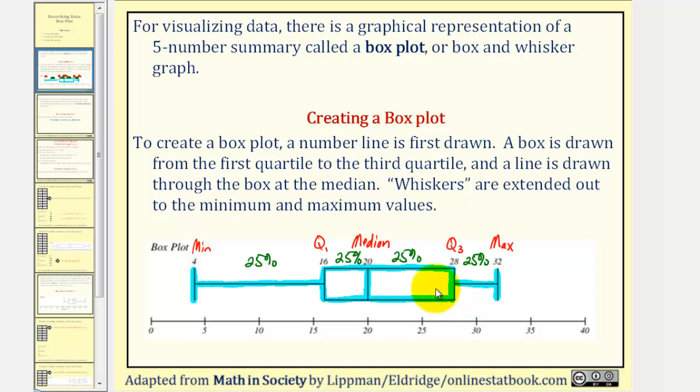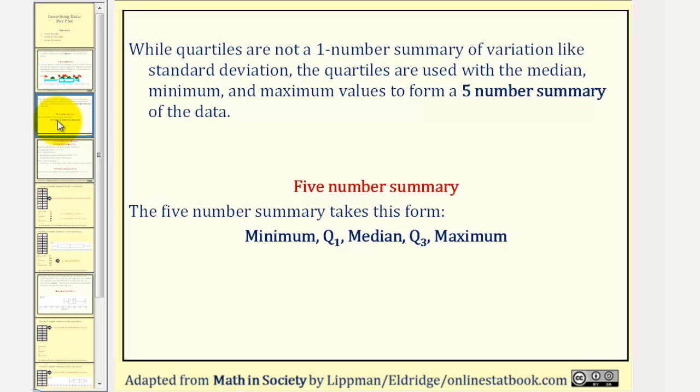There's also something called outliers when creating box plots, which we'll talk about after our first example. So the key to creating a box plot is to find the five-number summary, or the minimum, Q1, median, Q3, and maximum.